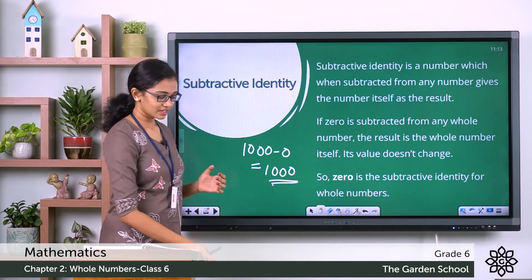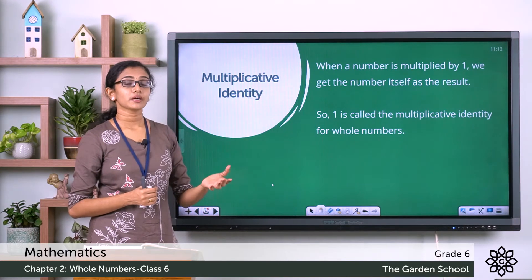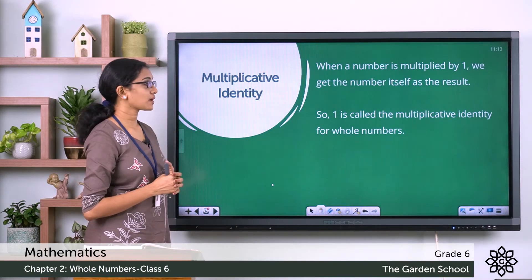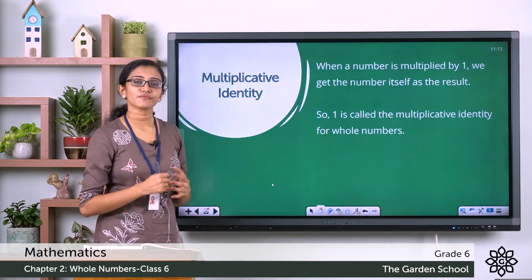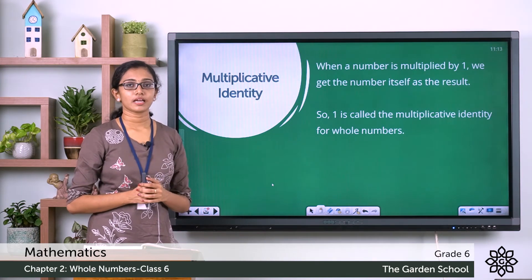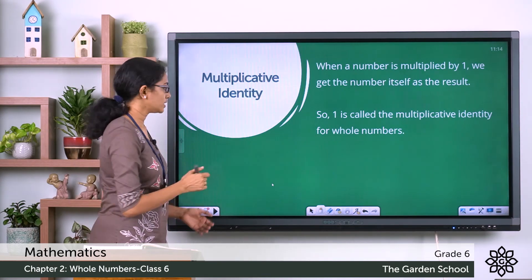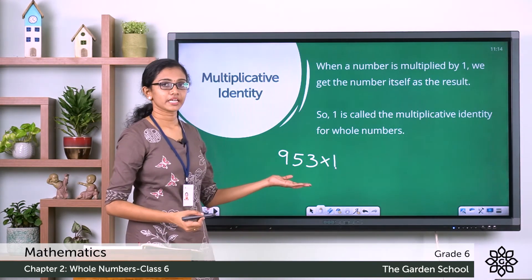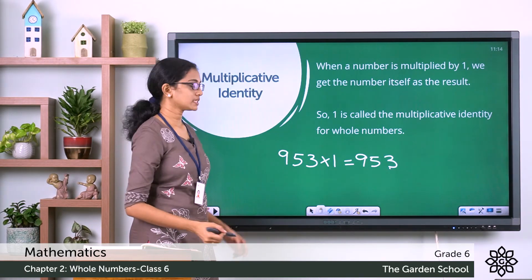Now what about multiplicative identity? What can be multiplied by any number to get that number itself as the product? Multiplicative identity is a number which can be multiplied by any number to get the given number itself as the product. We know any number can be multiplied by 1 and the result will be the given number itself. For example, multiplying 953 by 1 — the product is the number itself.